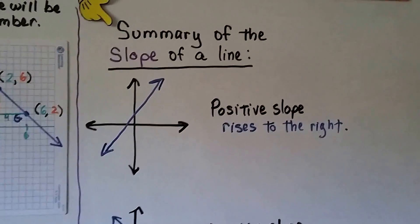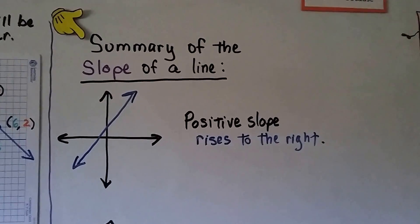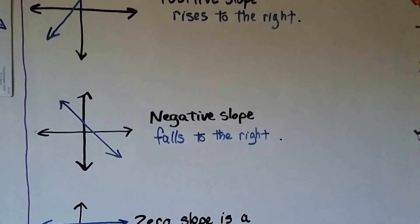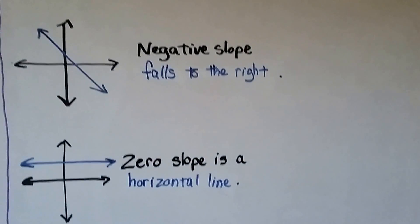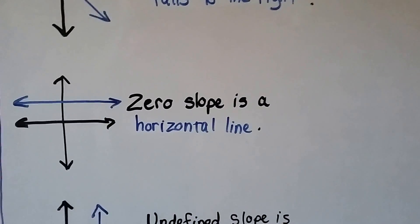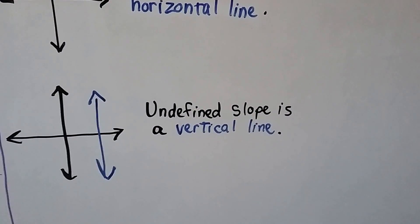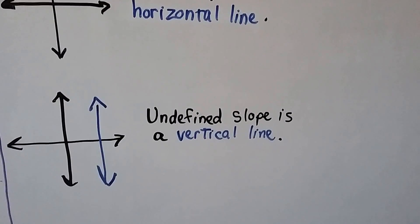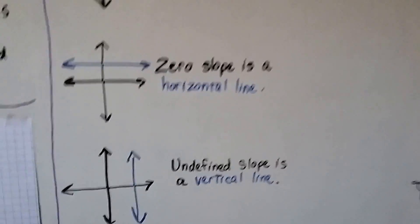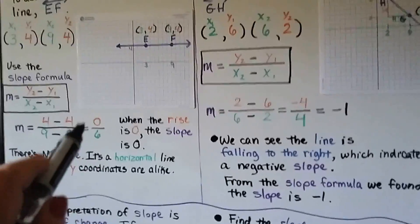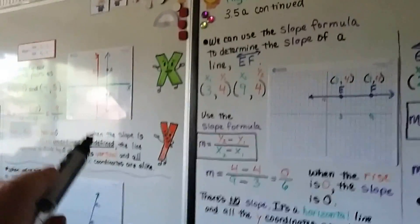So the summary of a slope of a line. If it's a positive slope, it rises to the right. If it's a negative slope, it falls to the right. If it's a zero slope, it's a horizontal line. If it's an undefined slope, it's a vertical line. Another way you can look at it is it's a horizontal line if the rise is a zero. And it's a vertical line if the run is a zero.